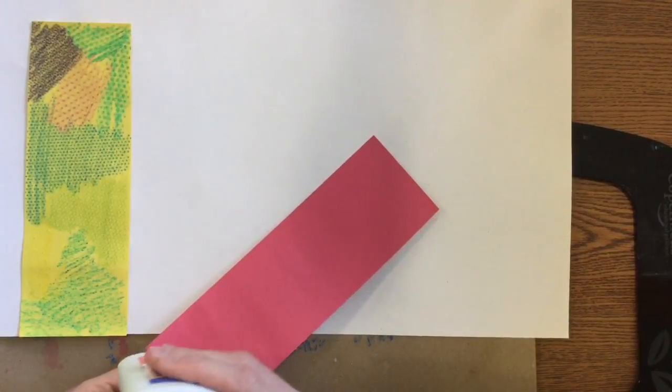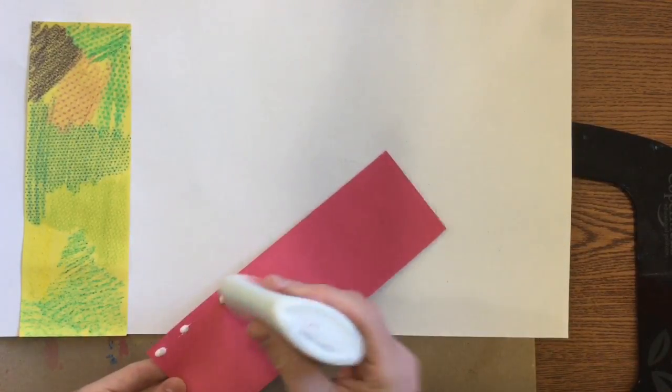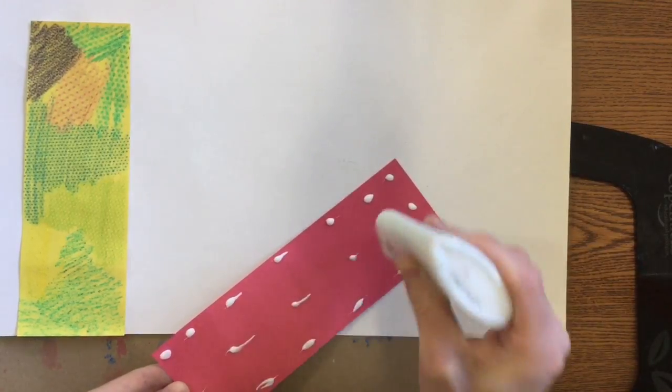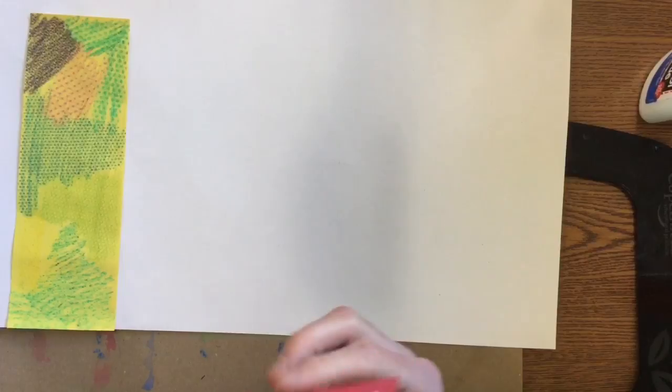When you get all your textures done and when you get these glued down to your large sheet of white paper, you're done for the day. Next time we'll work on adding the rest of our castle.